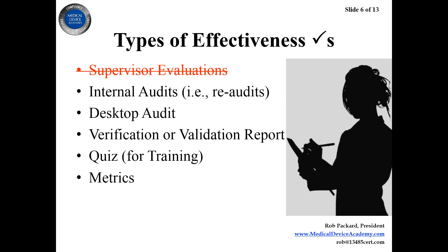The best method of all for effectiveness checks is something that has a metric — something measurable. That's why I like validation reports: they always have data and data analysis. Anytime you have a quality objective or a metric you can measure and graph, I can be convinced it's effective. If you have to use statistics to show the difference from before and after, it wasn't very effective — the improvement should be obvious just looking at the graph, like a miracle: 'call the CAPA.'